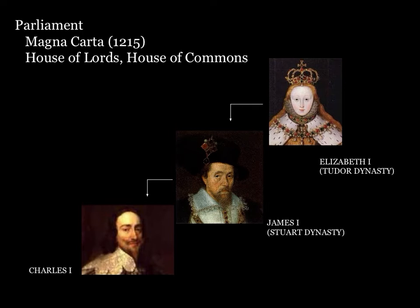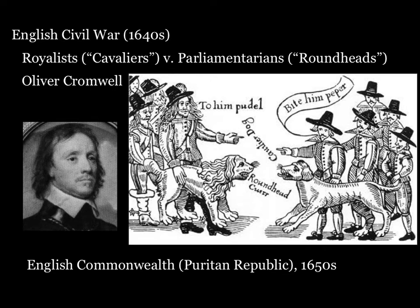By the 1640s, parliament had had enough. The tension between king and parliament sparked the English Civil War, fought throughout the 1640s. The war pitted forces loyal to Charles — called the royalists, or cavaliers — against forces loyal to parliament, called the parliamentarians or roundheads. The nickname 'cavalier' was meant to be derogatory, associating them with the French — calling attention to the fact that they wore long, flowing, curly hair and fancy dress. The nickname 'roundheads' was also meant to be negative, calling attention to the parliamentarians' round bowl haircuts and stark, plain manner of dress.